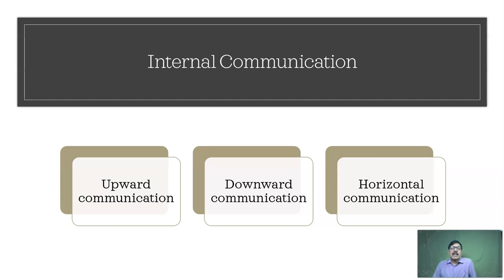In downward communication, information is transmitted from a hierarchically superior person to a subordinate. This is generally found in the army. Downward communication takes place once a hierarchy is built, and it involves giving instructions, circulating vital information, boosting morale, or increasing effectiveness. For example, a service manager submitting a work order to an employee is a sort of downward communication.